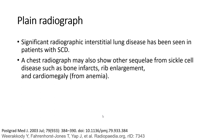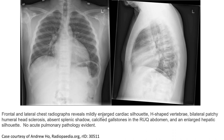On plain radiograph, significant radiographic interstitial disease has been seen in patients with sickle cell disease. The chest radiograph may also show other signs from sickle cell disease, such as bone infarcts, rib enlargement, and cardiomegaly from anemia. Frontal and lateral chest radiograph reveals mild bilateral basilar atelectasis, H-shaped vertebrae, and bilateral patchy humeral head sclerosis.